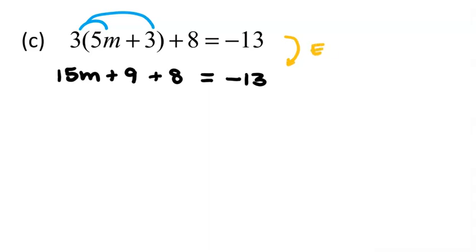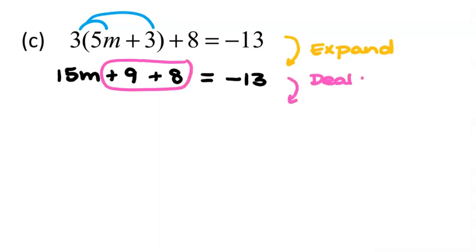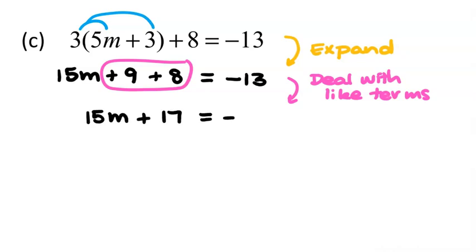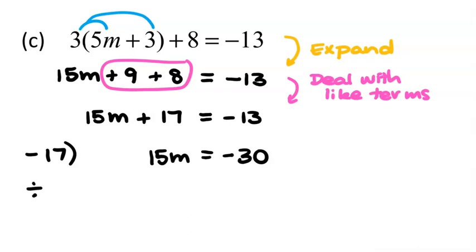Going from there we expanded. Whenever working with equations, if you find like terms, deal with those before moving on — we have plus 9 and plus 8. Dealing with those first means our solving process will be much neater. So our next line is 15m plus 17 equals negative 13. We haven't done more solving yet, just dealt with like terms. Now take 17 away from both sides: 15m equals negative 13 minus 17, which is negative 30. Dividing both sides by 15, we get m equals negative 2.